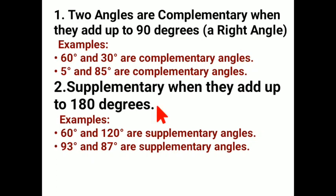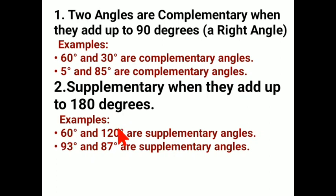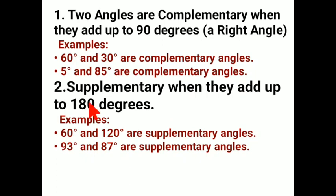Next we have supplementary angles. Two angles are supplementary when they add up to 180 degrees. In the complementary case, the sum was 90 degrees; now in supplementary, it is 180 degrees. For example, 60 degrees and 120 degrees are supplementary angles — when you add 60 and 120, you get 180. Similarly, 93 plus 87: when they are added, they form 180 degrees. So if a pair of angles adds up to 180 degrees after adding, we refer to those as supplementary angles.